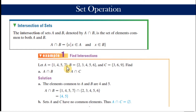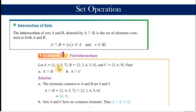Let us provide an example. We are given three sets: set A, set B, and set C. The first question is the intersection of A and B, read as 'A intersection B.' This means we are going to collect all the elements that are common to both A and B. Is one a common element? No. How about four? Yes. Five? Yes. Seven? No. So the intersection is the set containing four and five.